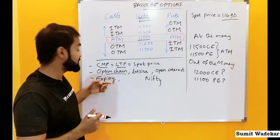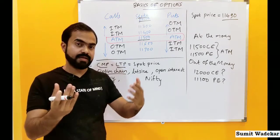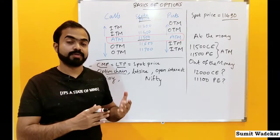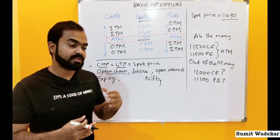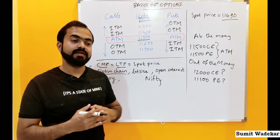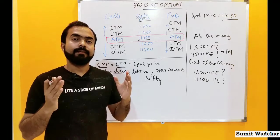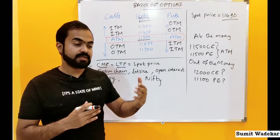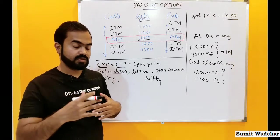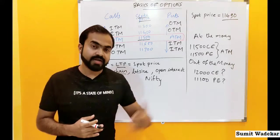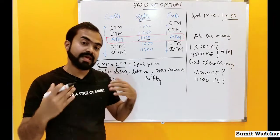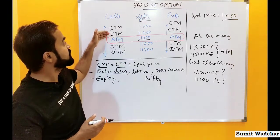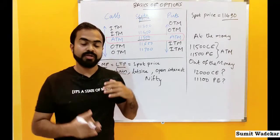One more important concept is expiry. Derivatives like futures have monthly expiry, and options can have weekly expiry as well. Index options like Nifty and Bank Nifty have weekly options, while stock options are monthly. Monthly expiry means the last Thursday of that month. At expiry, options that remain out of the money become zero, while options that are in the money retain their intrinsic value.